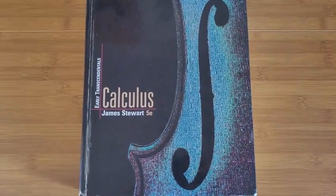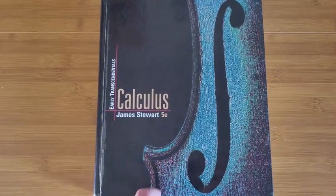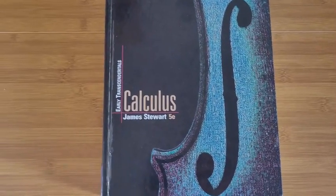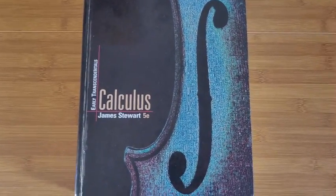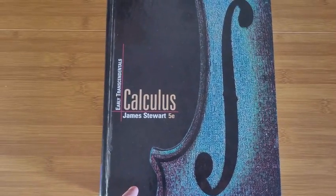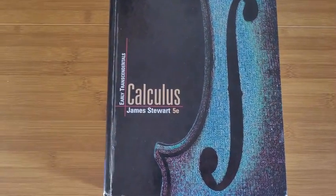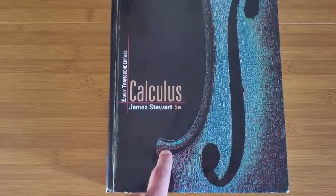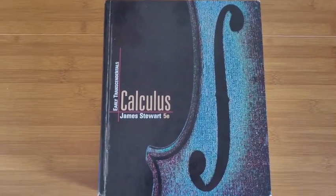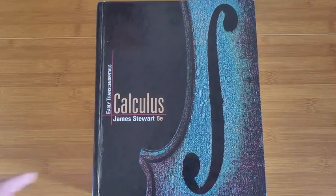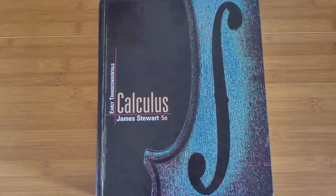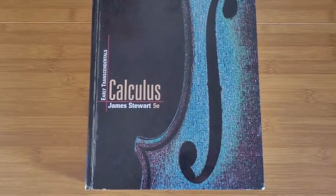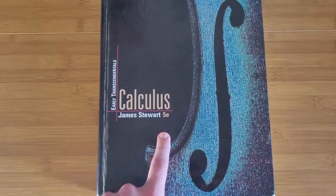Now, one thing to note here is that the newer versions like the eighth and ninth edition on Amazon can cost upwards of like $200, which is quite expensive. So there isn't really much of a difference between the newer versions and older versions like these, like just slight differences maybe in practice problems or exercises. But in general, the lecture content is basically the same. So if you want to save money, I'll definitely recommend trying to get something along these lines.